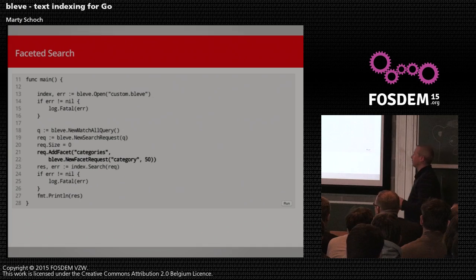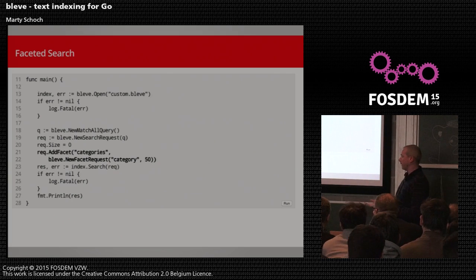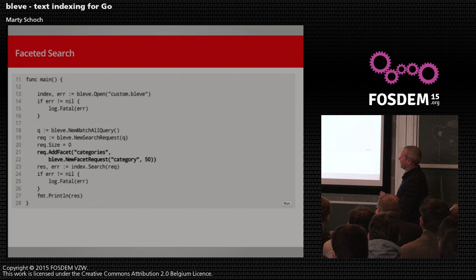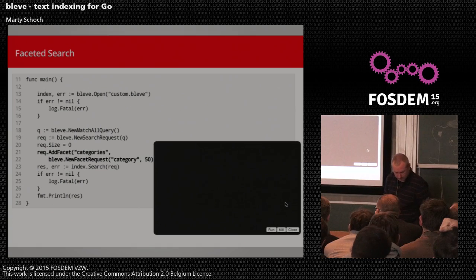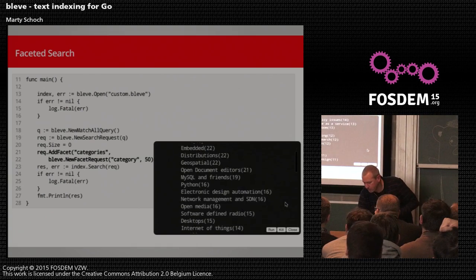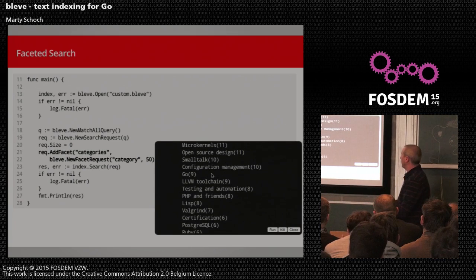I mentioned faceted search at the beginning. To demonstrate: in the data structure there was a field called category, corresponding to the track of the talk. I've added a facet request called 'categories' — it creates a bucket for each different category and counts how many results land in each bucket. I set the search size to zero on line 20: running a match-all query but not interested in the search results themselves — just the facet results. Running that returns the top 50 categories. Lightning talks had 41, Java 26, Go had 9.